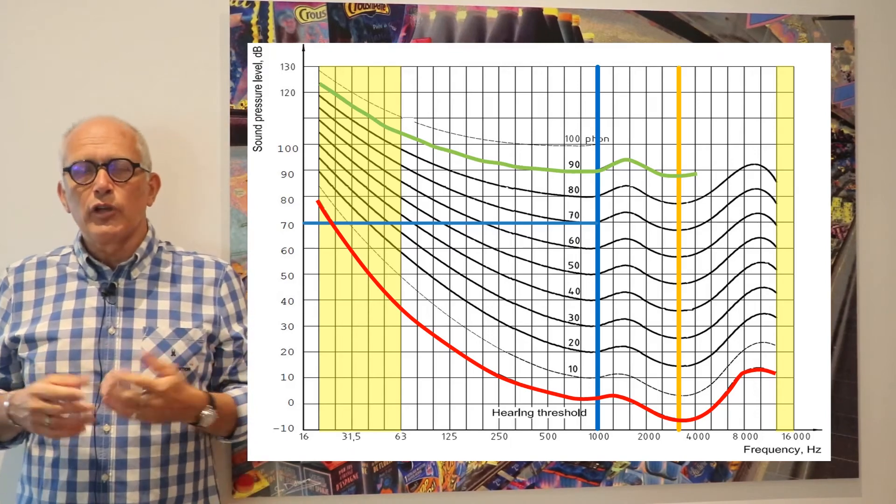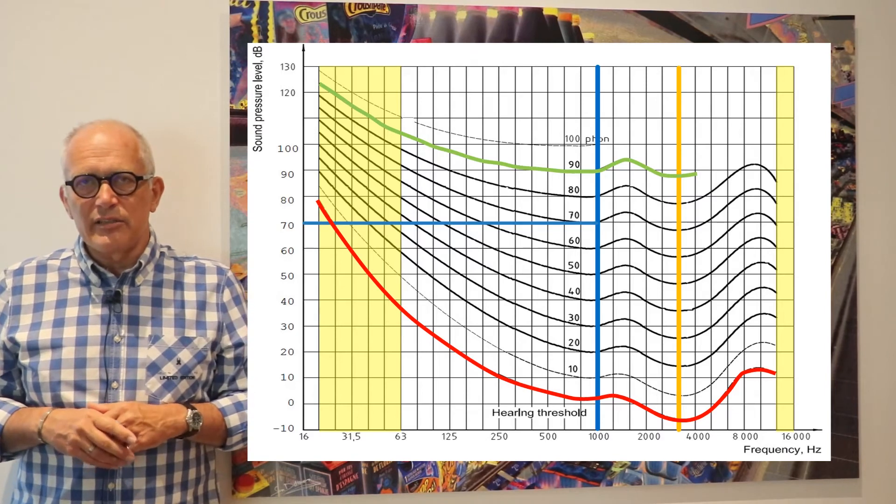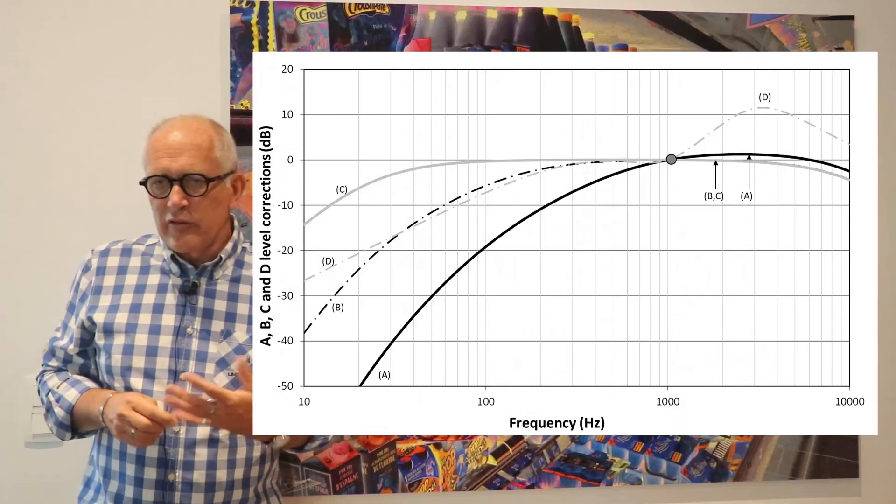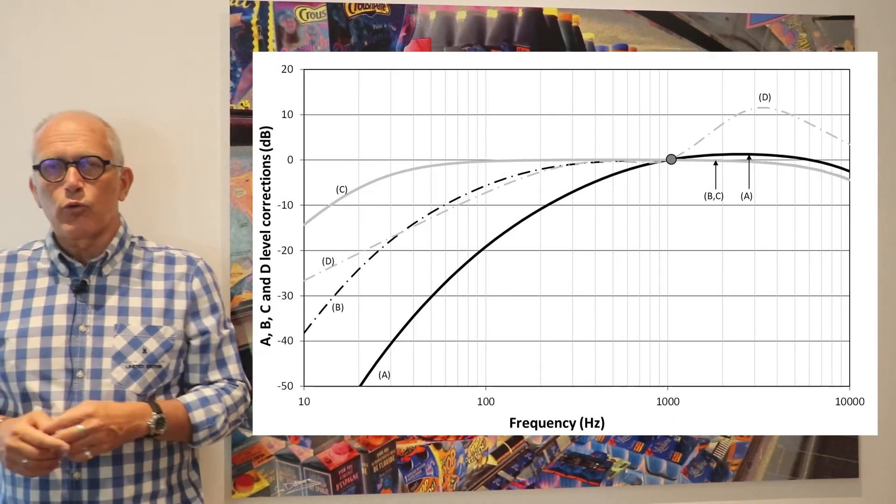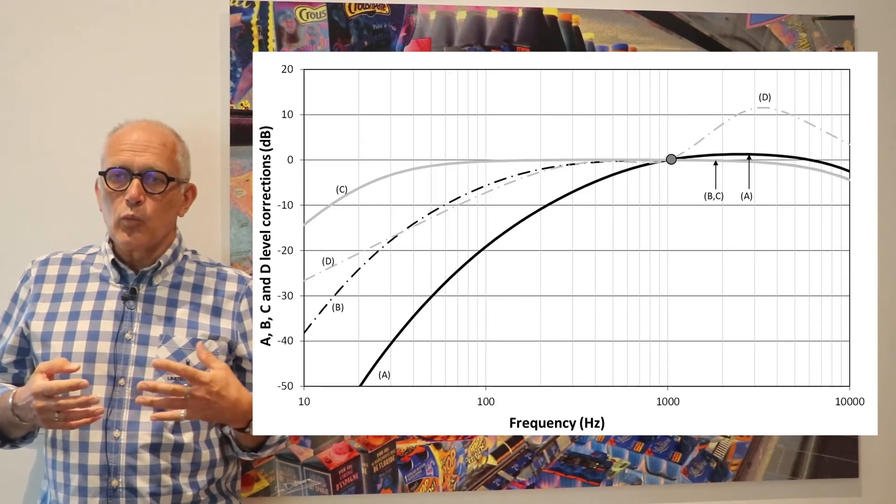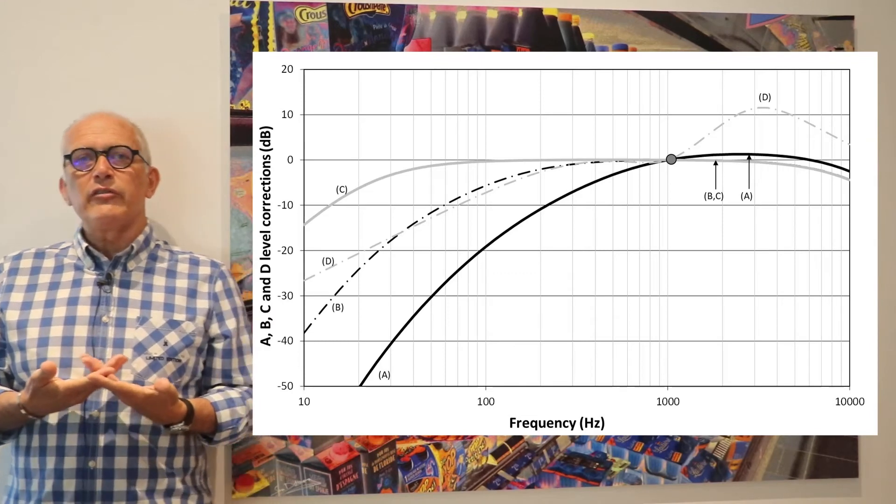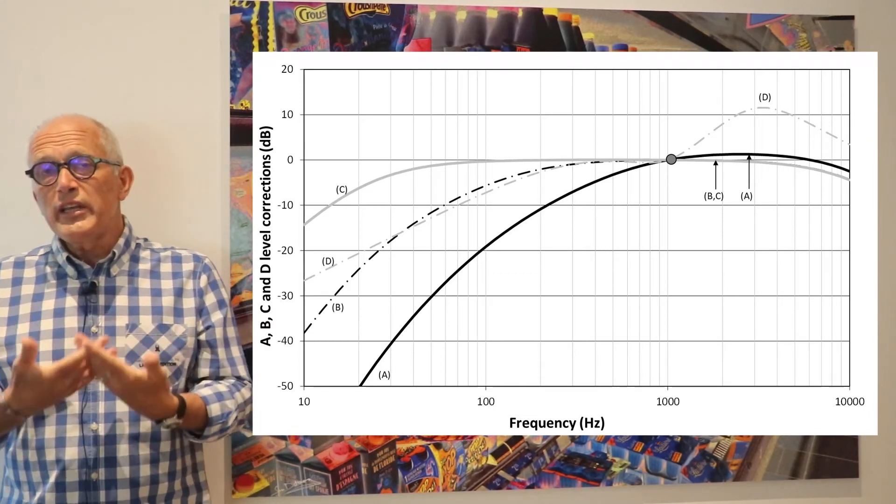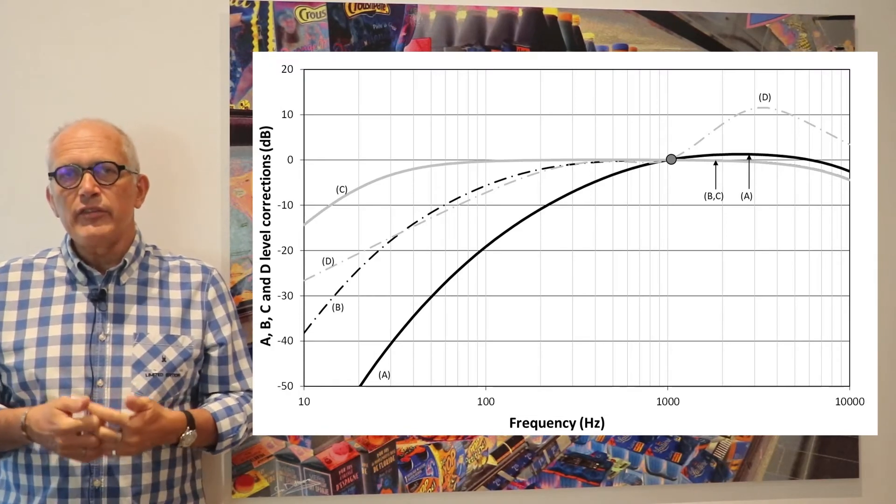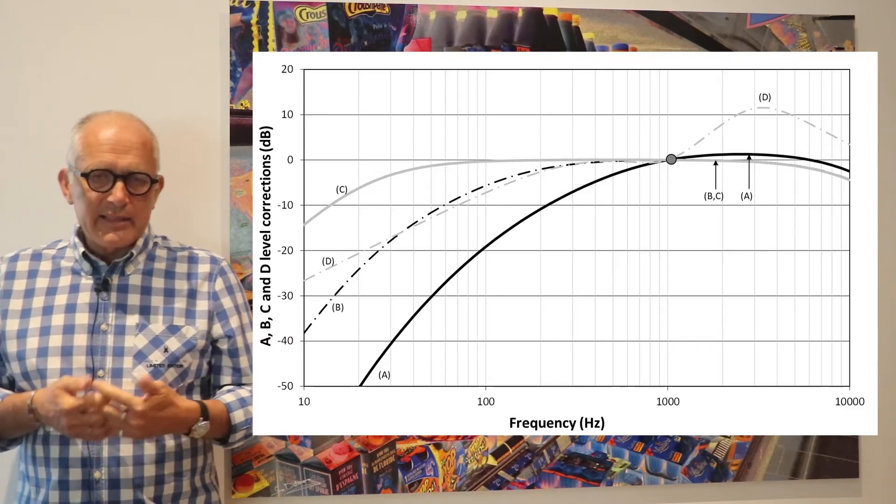When you listen to very loud noise you have less variation in sensitivity with frequency. This observation by Fletcher and Munson and followers is so important that we want to use that information we have about the sensitivity of the ear to tweak sound level measurements to match that sensitivity, to take that differential sensitivity into account.